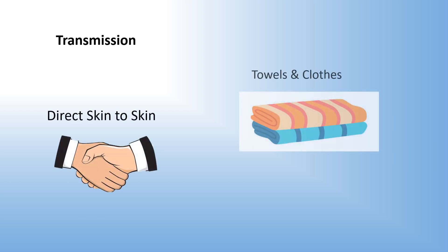The primary mode of transmission is through direct skin-to-skin contact. Additionally, scabies can spread through infested clothing, bedding, or towels.